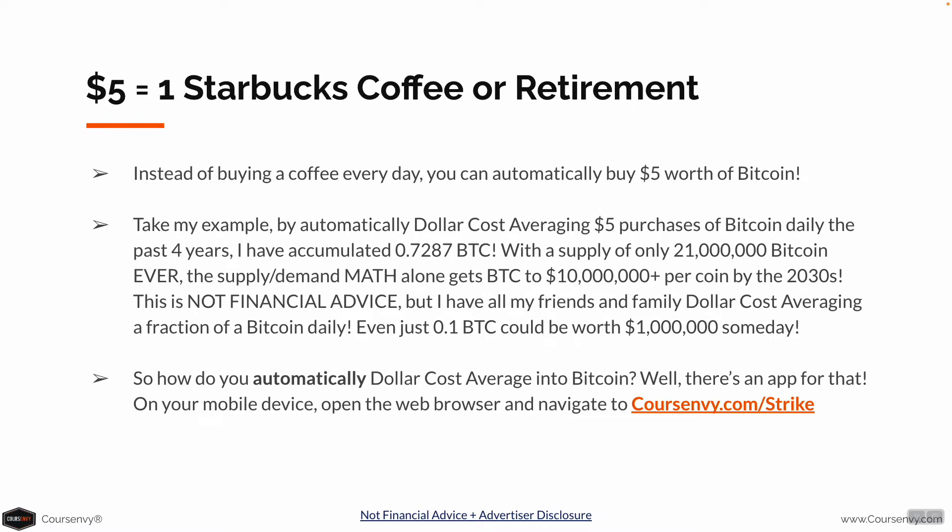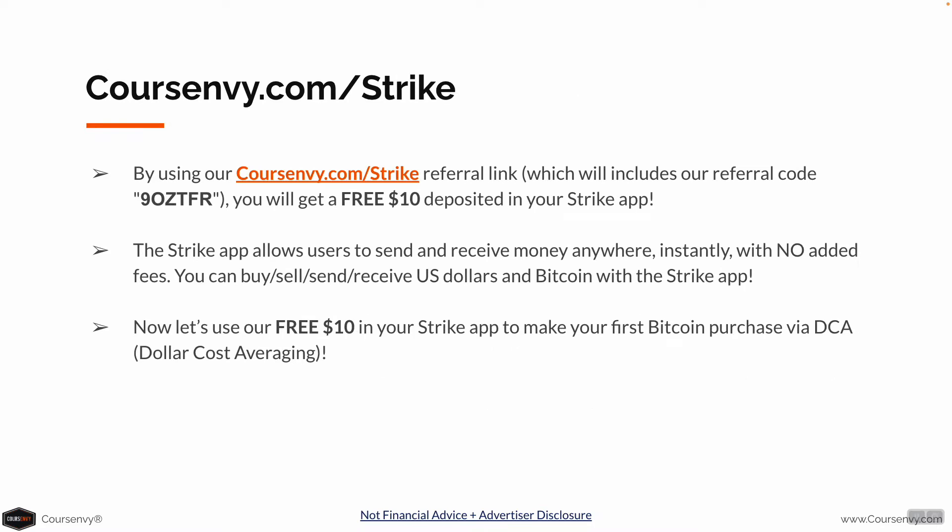So how do you automatically dollar-cost average into Bitcoin? There's an app for that. On your mobile device, open the web browser and navigate to coursenvy.com/strike. By using our referral link, which includes our referral code, you will get a free $10 deposited in your Strike app. The Strike app allows users to send and receive money anywhere instantly with no added fees. You can buy, sell, send, and receive U.S. dollars and Bitcoin in the Strike app.